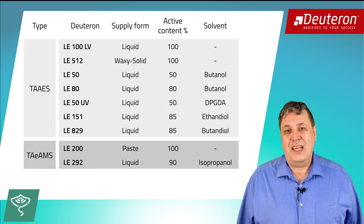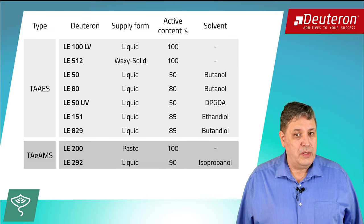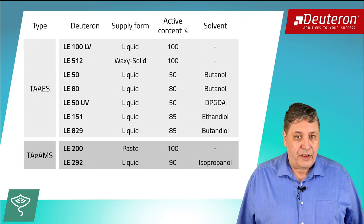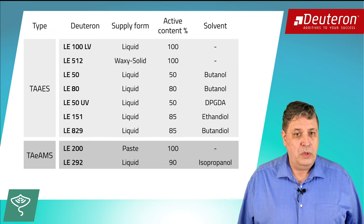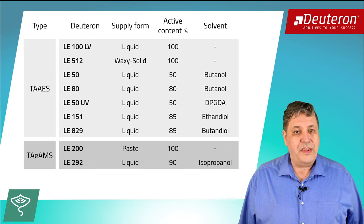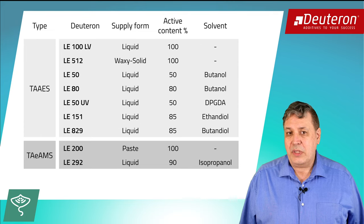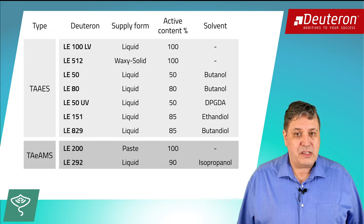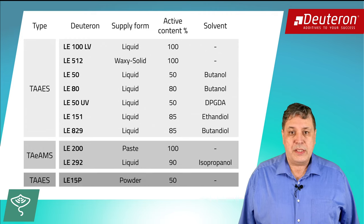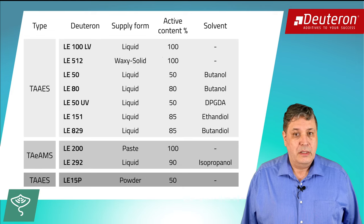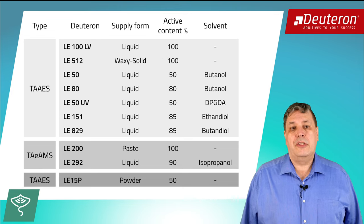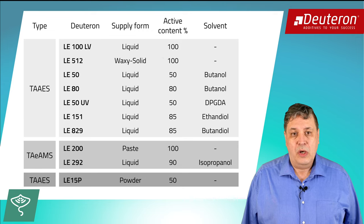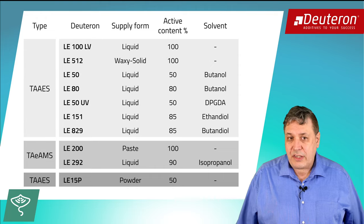The second product group are TAEAAS products. Deuteron LE200 is a 100% type and pasty, like thick honey. Its dilution in only 10% isopropanol, our Deuteron LE292, provides very low viscosity. With these two variants, the product should be usable in most cases. Check out the labeling of these products — they differ extremely from the TAEAS types. The third group is also based on our classic quad, but we dried it. This grade, called Deuteron LE15P, has an active content of 50% and is a dry powder. This allows usage in applications where liquids cannot be used or are unsuitable for the processing, for example in extruders.